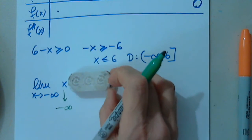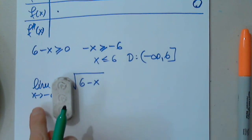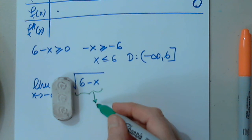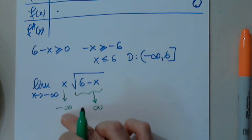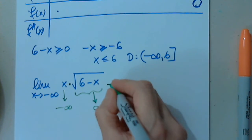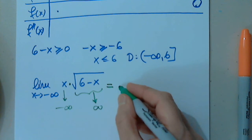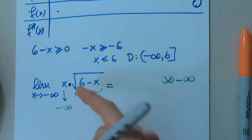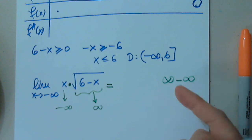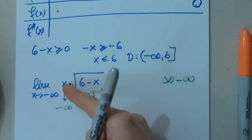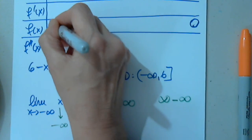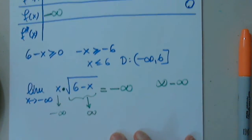Let's take it piece by piece. When x approaches negative infinity, x goes to negative infinity. The square root of 6 minus x goes to positive infinity. So we have negative infinity times positive infinity. That is one of our indeterminate cases — it's a product, negative infinity times infinity, not a difference.